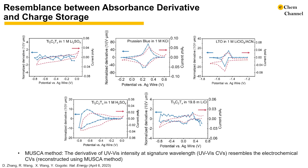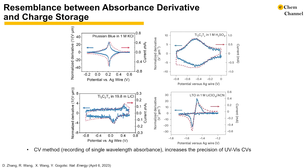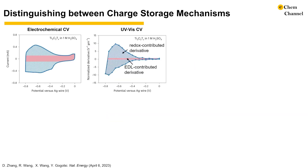However, these voltammograms have limited resolution because of the 50 mV potential steps. To improve the temporal resolution further, we found that recording single wavelength absorbance allowed us to monitor electrochemical reactions during chronoamperometry under operando conditions, giving better precision of UV-Vis CVs for all electrochemical systems. Since UV-Vis probes the electronic structure of materials, the absorbance derivative is indicative of the extent of faradaic charge transfer. We can use this information to distinguish charge storage mechanisms and even quantify the electron transfer number.